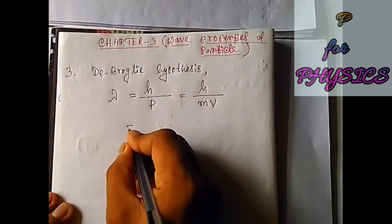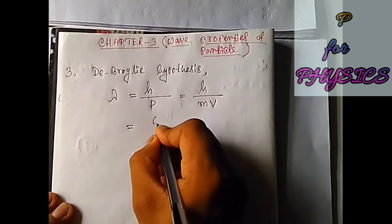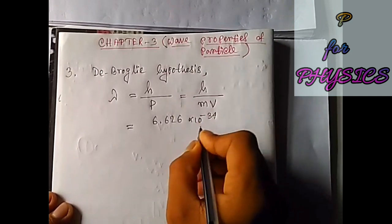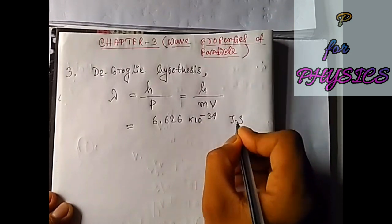Let's do that. Now, put the value of h: 6.626 × 10^-34 joule-seconds.